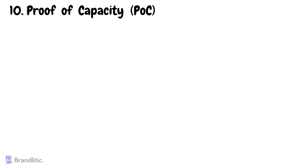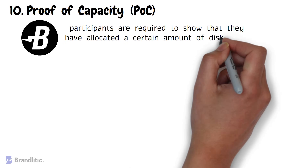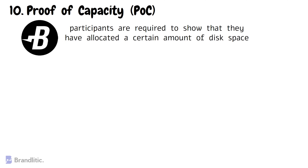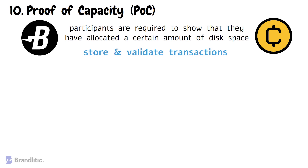Number ten: Proof of Capacity, or POC. Proof of Capacity is a consensus algorithm used in blockchain networks such as Burstcoin. Participants are required to show that they have allocated a certain amount of disk space to the blockchain network. This allocated space is used to store and validate transactions, and the participant is rewarded with cryptocurrency proportional to the amount of disk space they have allocated.